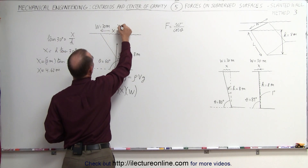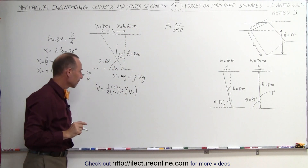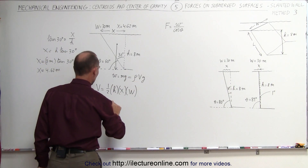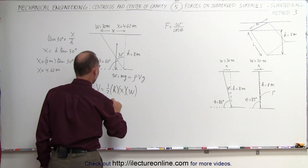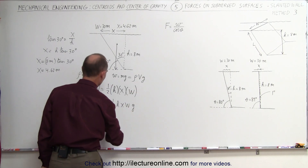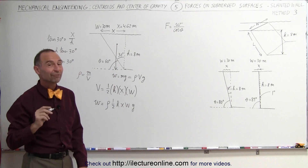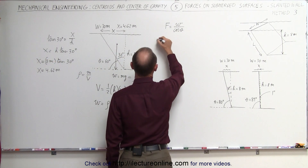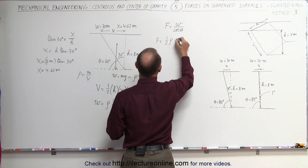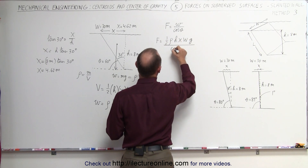Plugging x = 4.62 meters into the formula, the weight equals rho times one-half times h times x times w times g. Taking that and dividing by the cosine of theta, the force against the slanted portion of the dam equals one-half times density times h times x times w times g, all divided by cosine of theta.